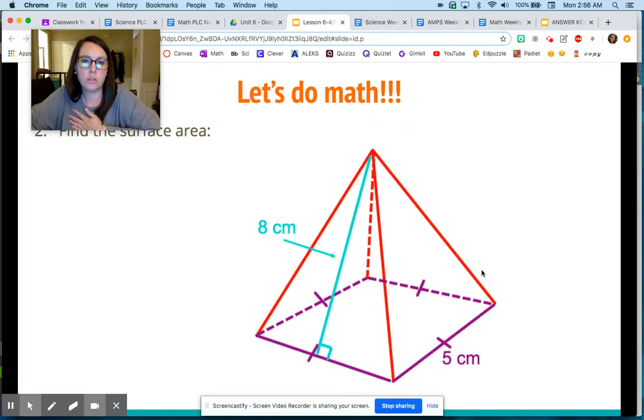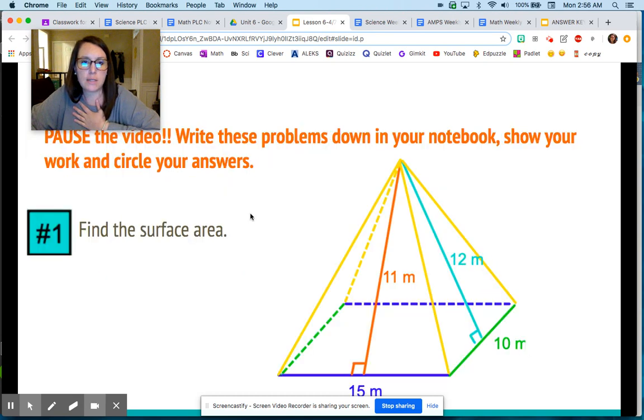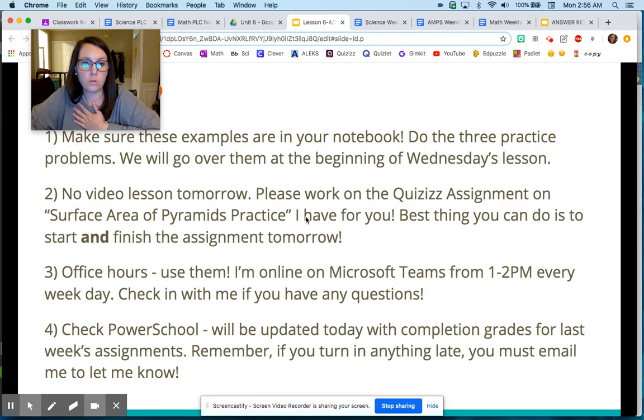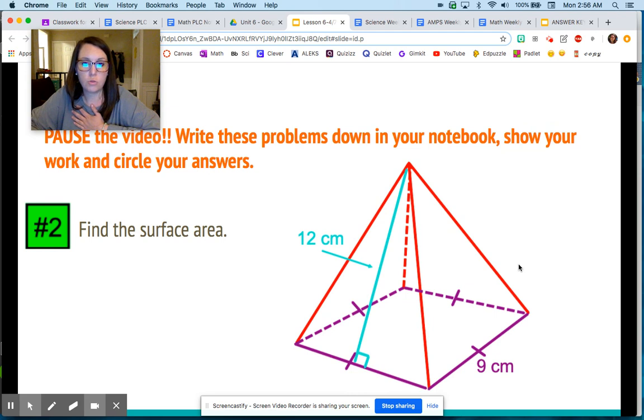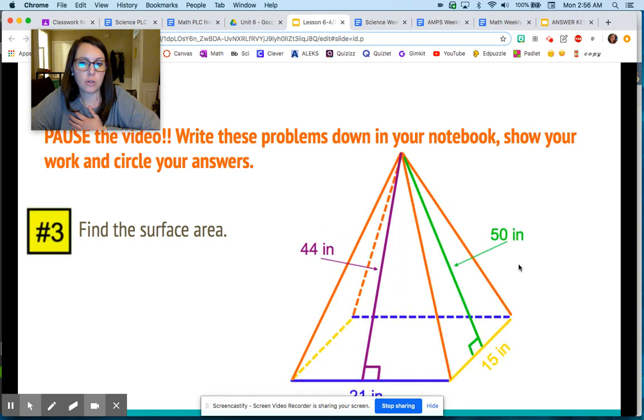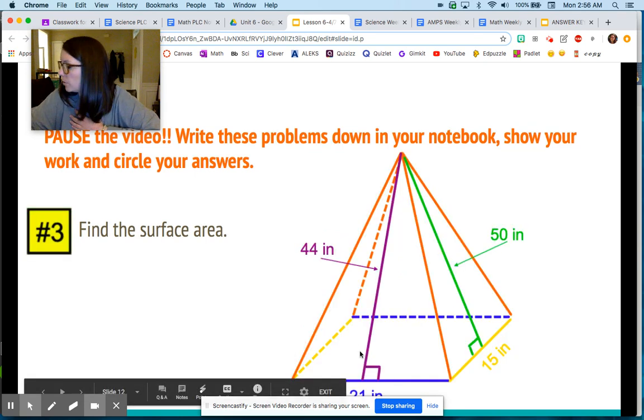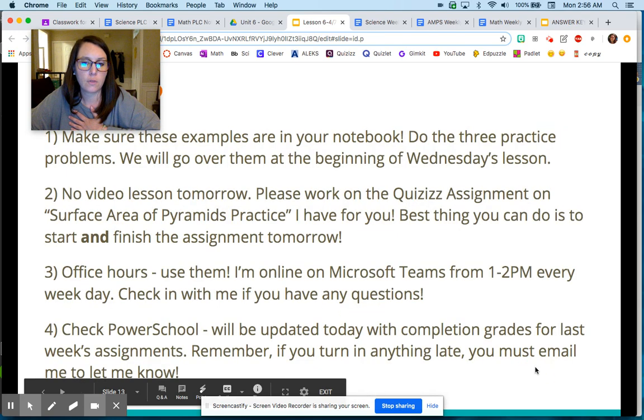To switch back over, those were those three problems. Now it's your turn. You can write these down. This one right here, find the surface area. If you need to pause, okay. And then number two, if you need to pause here. And then number three—oh, you can't see that number right there. It is 21, this number right here.